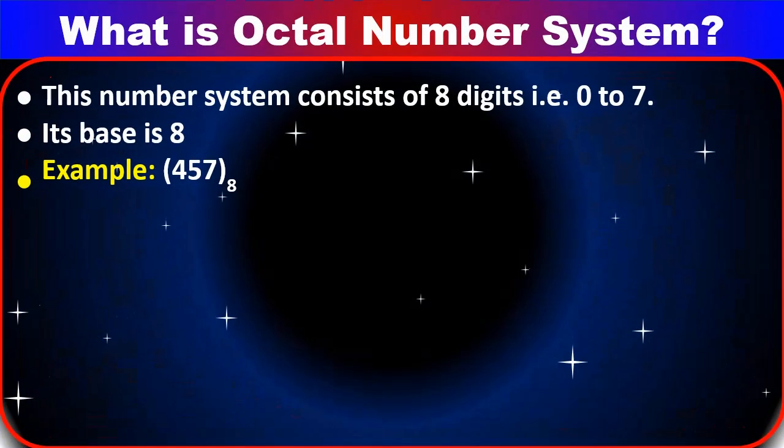Next, what is the octal number system? The octal number system consists of 8 digits, that is 0 to 7, and its base is 8. One example is 457 (base 8). You have to remember that all the digits must be from 0 to 7.